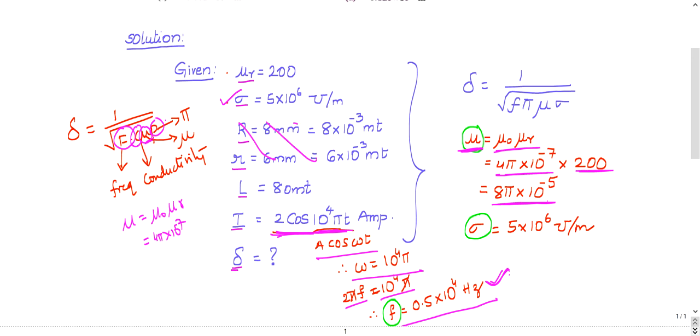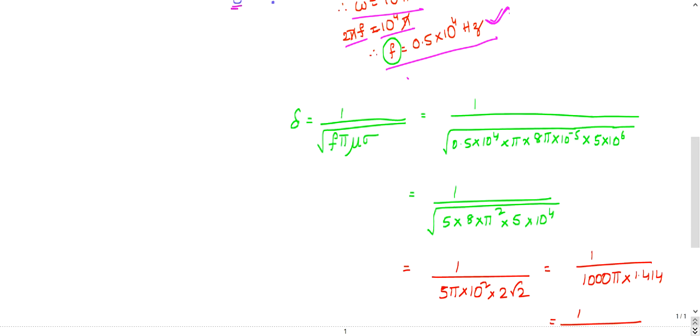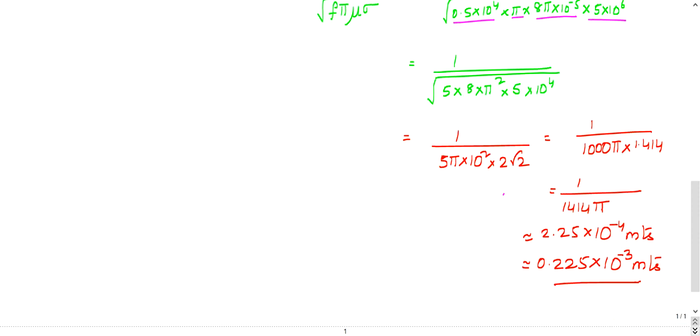Then π is a constant, so everything is available. The radius, length—all that is redundant information, not necessary. Everything is available, just substitute. So frequency I substituted, π I substituted, μ I substituted, and conductivity I substituted. This simplification requires a lot of time, and finally you will get answer as 0.225×10^-3 meters.